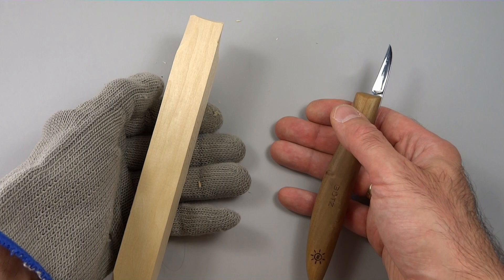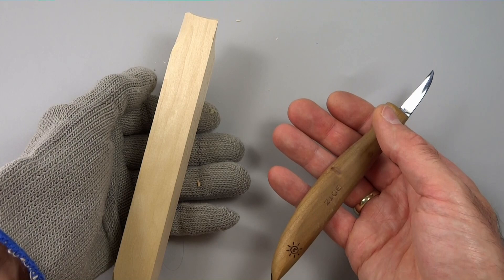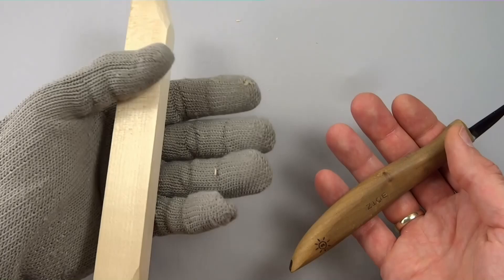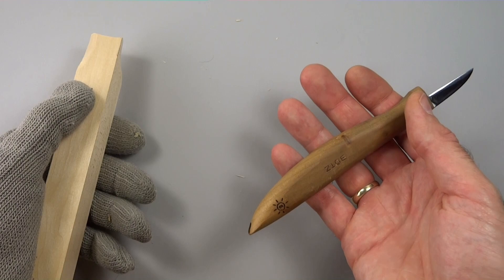Before discussing the four cuts, let's talk about how to hold the knife and in which hand to hold it. You want to hold the knife in your right hand. Since I'm a righty, it belongs in this hand, while my left hand holds the project with a carving glove.